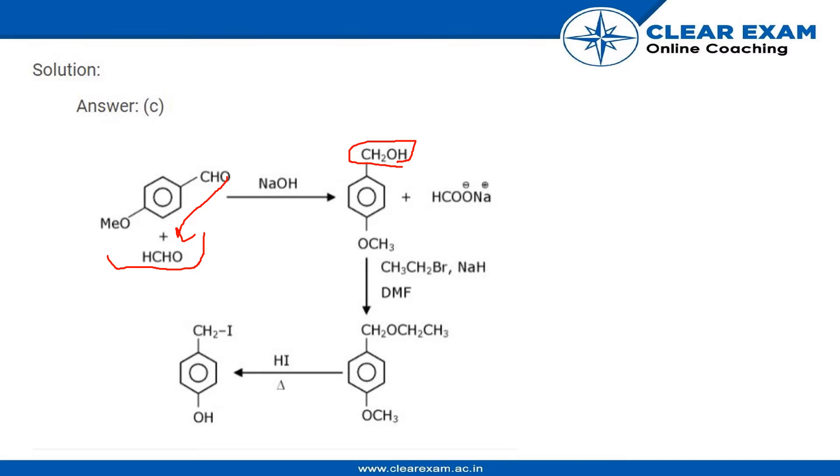Na+ makes the H+ go away to react and form CH2OH, because when OH reacts over here, the product formed is CHOOH. The extra oxygen present is taken by HCHO, so the product that remains is CH2OH.